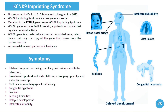A missense mutation results in the substitution of one amino acid for another in the protein, potentially disrupting its function. Loss of function mutations can reduce or abolish the normal function of the KCNK9 potassium channel, leading to decreased neuronal inhibition and increased susceptibility to the symptoms associated with the syndrome.